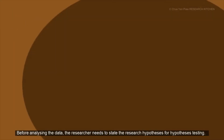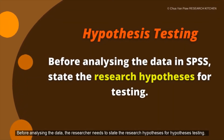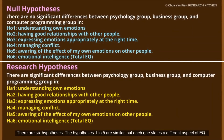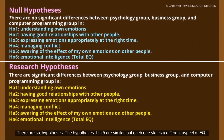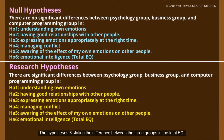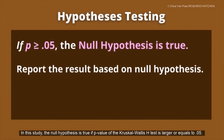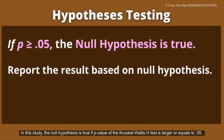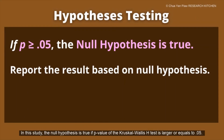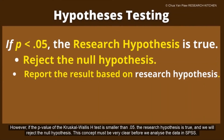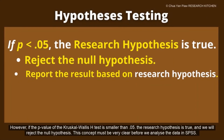Before analyzing the data, the researcher needs to state the research hypothesis for hypothesis testing. There are six hypotheses. Hypotheses 1 to 5 are similar but each one states a different aspect of EQ, and hypothesis 6 states the difference between the three groups in the total EQ. The null hypothesis is true if the p-value of the Kruskal-Wallis H test is greater than or equal to 0.05. However, if the p-value is smaller than 0.05, the research hypothesis is true and we reject the null hypothesis. This concept must be very clear before we analyze the data in SPSS.